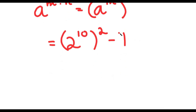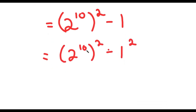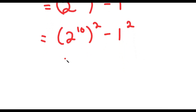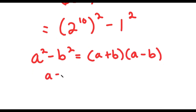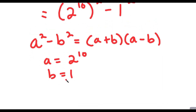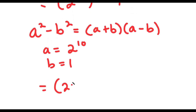Now, I can rewrite 1 as 1 squared, because 1 is the same thing as 1 squared. So now I have 2 to the power of 10, to the power of 2, minus 1 squared. The reason I put this in this form is because now I can use the property a squared minus b squared equals a plus b times a minus b. In this case, a is equal to 2 to the power of 10 and b is equal to 1. So now I get 2 to the power of 10 plus 1 times 2 to the power of 10 minus 1.